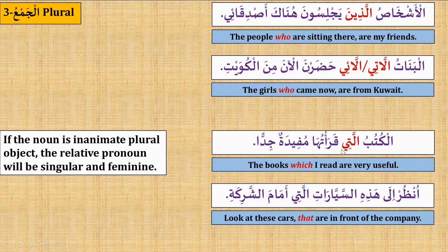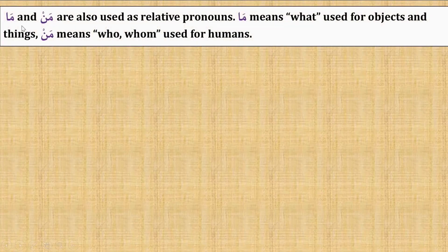Now al-jam'ah, plural relative pronouns. Al-ashkhasu alladhina yajlisuna hunaka asdiqa'i — the people who are sitting there are my friends. Al-ashkhasu is plural of shakhsun, person. For feminine: al-banatu allati hadarna al-ana min al-Kuwait — the girls who came now are from Kuwait. Please note: if the noun is an inanimate plural object, the relative pronoun will be singular and feminine. Al-kutubu allati qara'atuha mufidatun jiddan — the books which I read are very useful. Al-kutub is plural of kitab and inanimate, so the relative pronoun must be singular and feminine — allati. Unzur ila hadhihi al-sayyaraat allati amama al-sharika — look at these cars that are in front of the company.